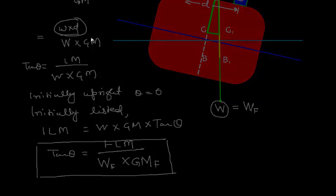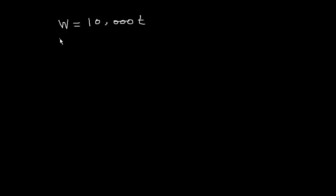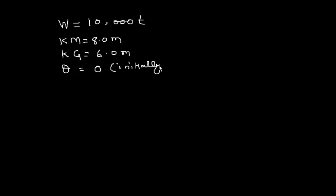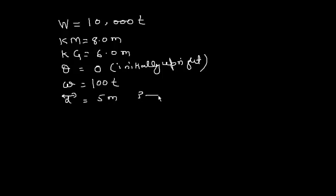Let me explain the application of this formula with simple numbers. Suppose the displacement of the ship is 10,000 tonnes, KM is 8 metres, KG is 6 metres, and the ship is initially upright, so theta is 0. A small weight of 100 tonnes is shifted transversely through a horizontal distance of 5 metres from port to starboard. What is the list caused?